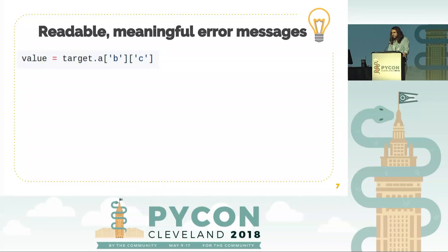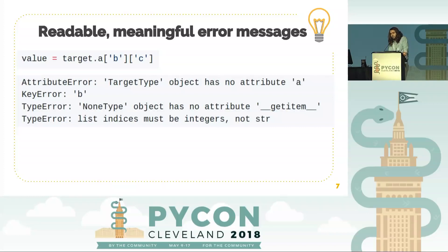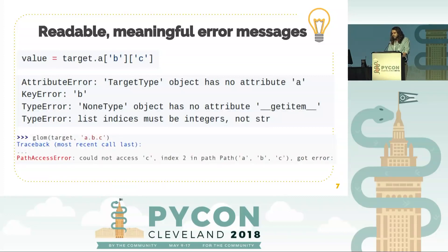Here's the whole reason you need that in the first place. If you have a line like this, you could get four different exceptions. Experienced developers will split this into multiple try-except blocks, but it's still tedious. For exceptions like 'NoneType object has no attribute' and 'list indices must be integers', it's hard to figure out which data structure had the problem. What we need is good error messages. Glom gives you a path access error that says exactly where it failed — for example, 'could not access C at index 2 of path A, B, C' — along with the underlying error. You're no worse off than before, and in fact much better.